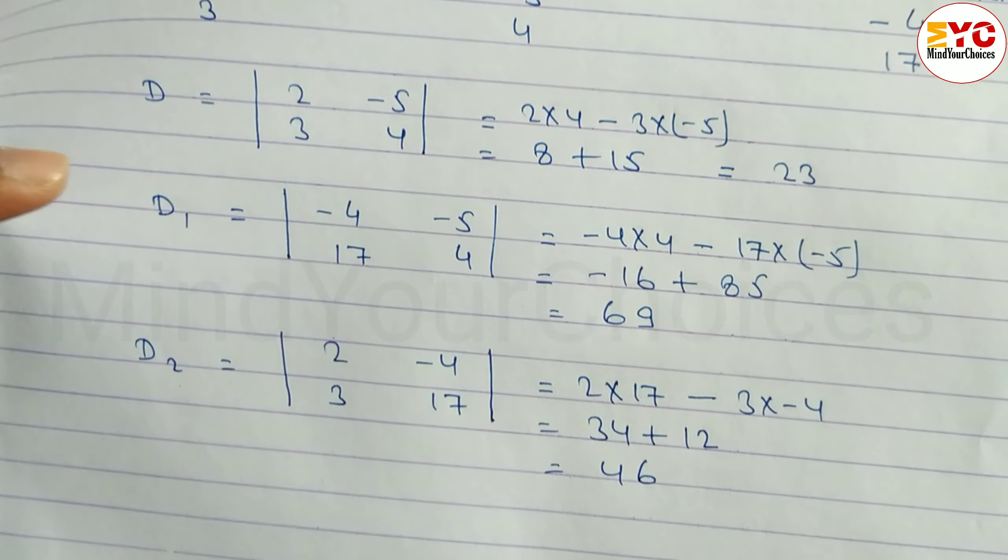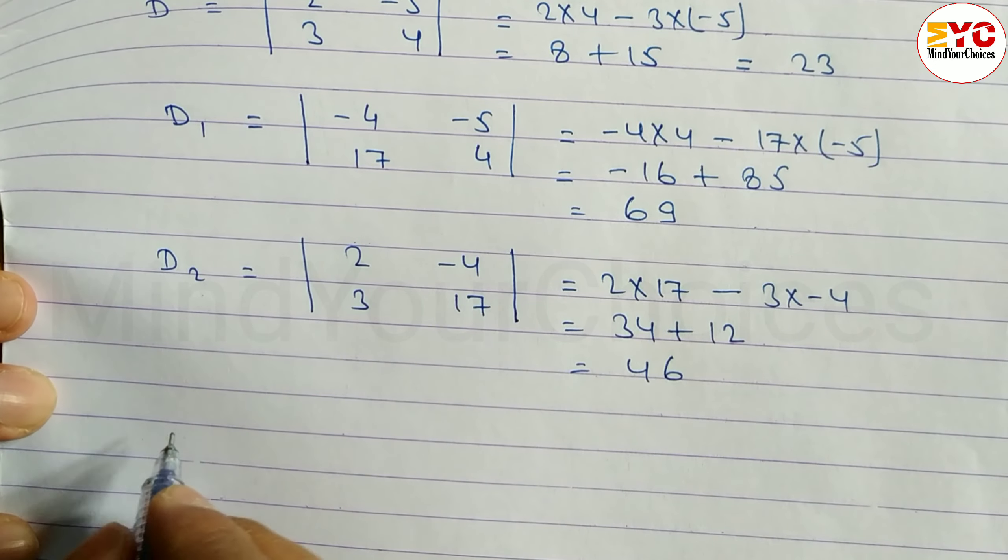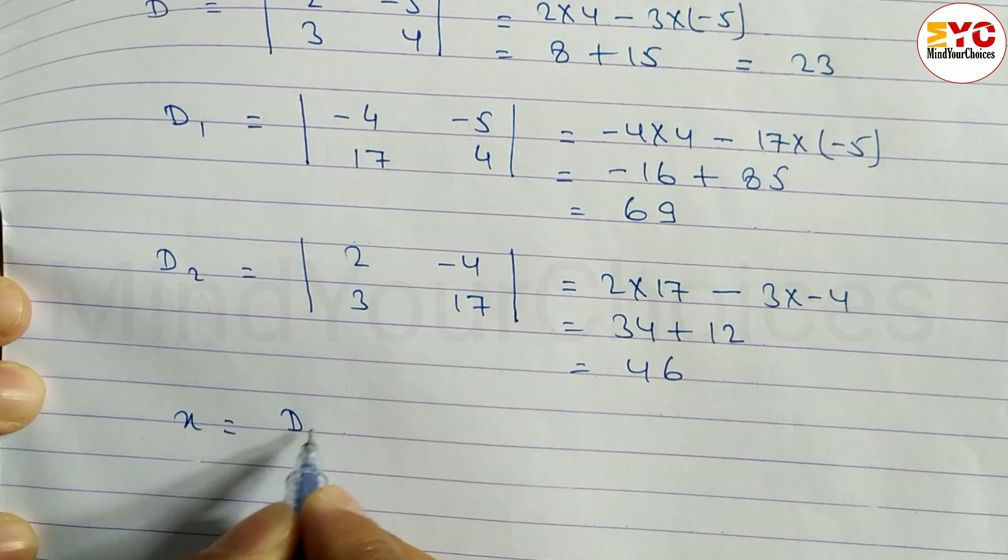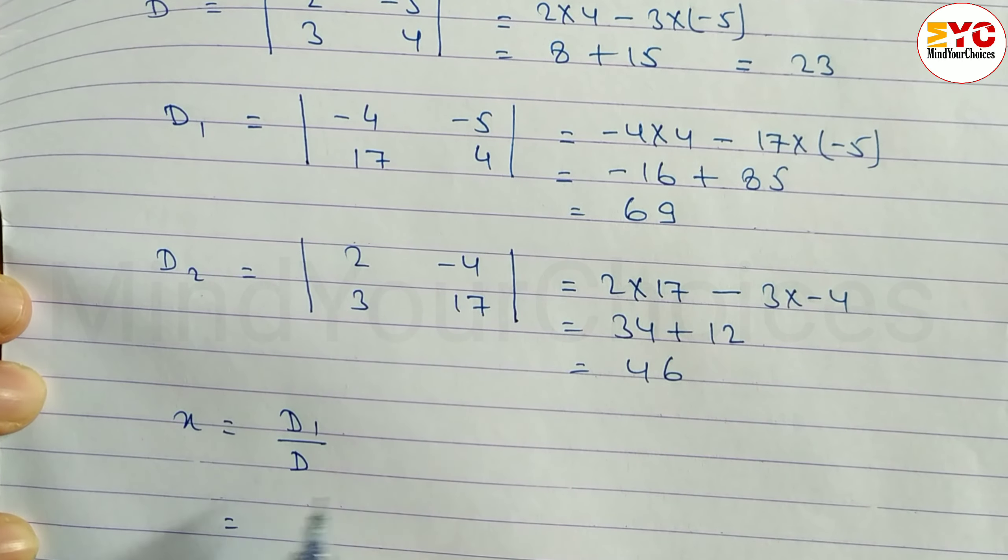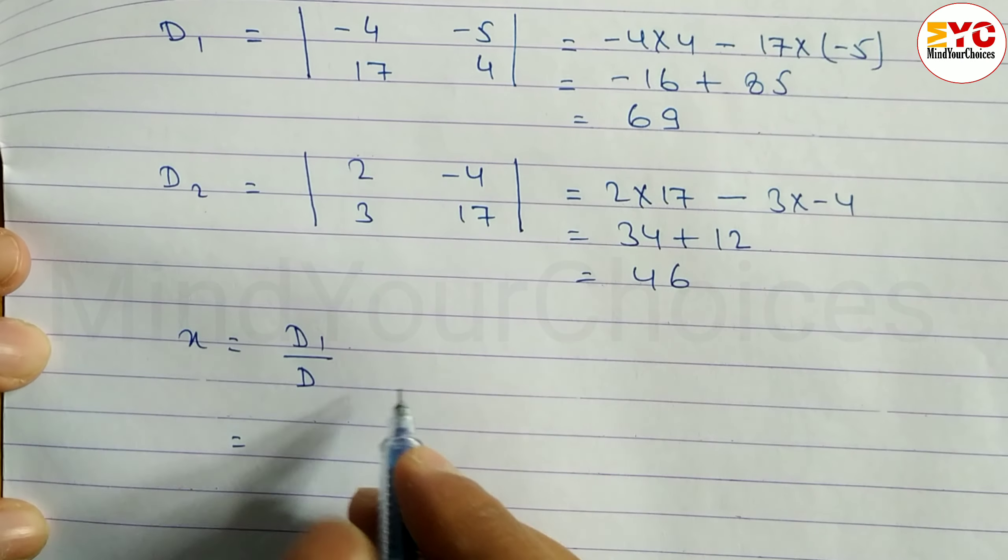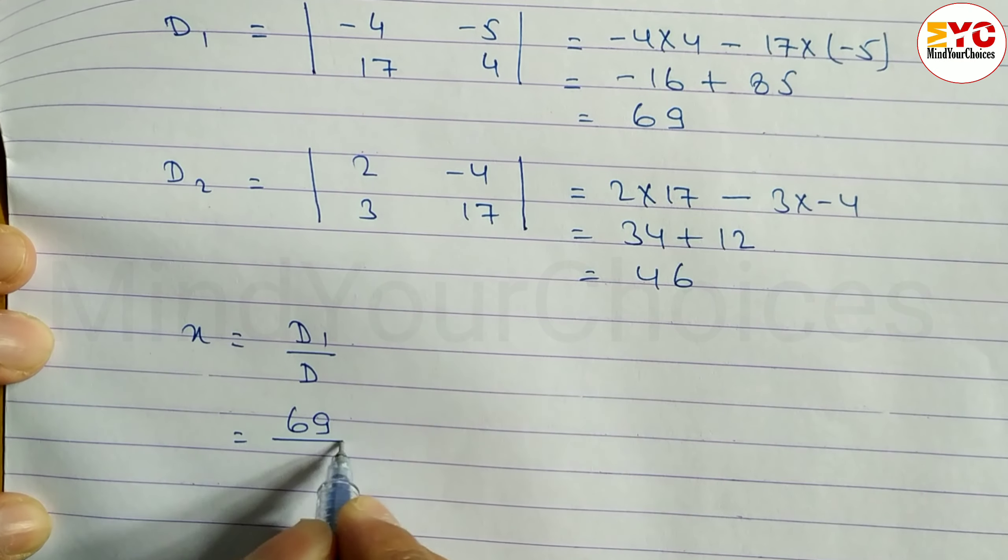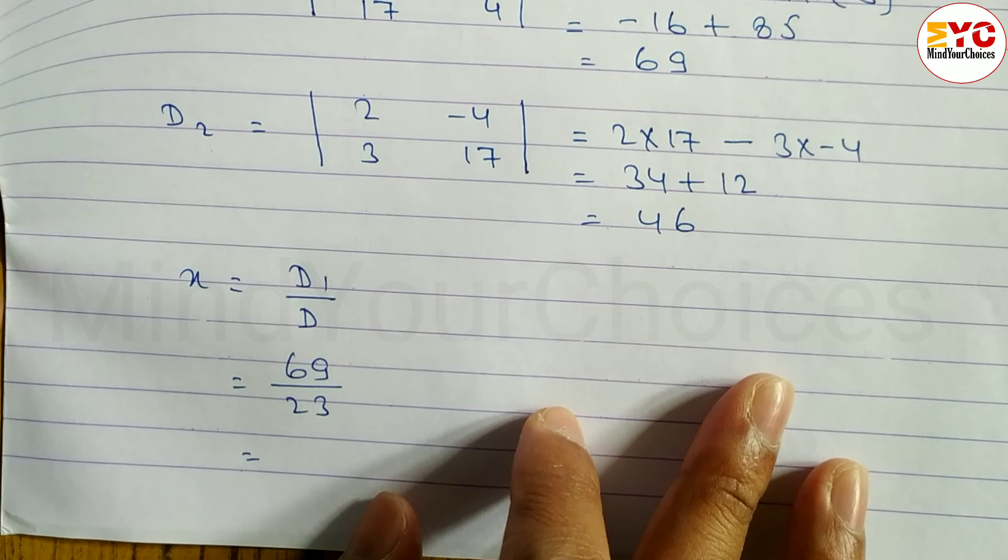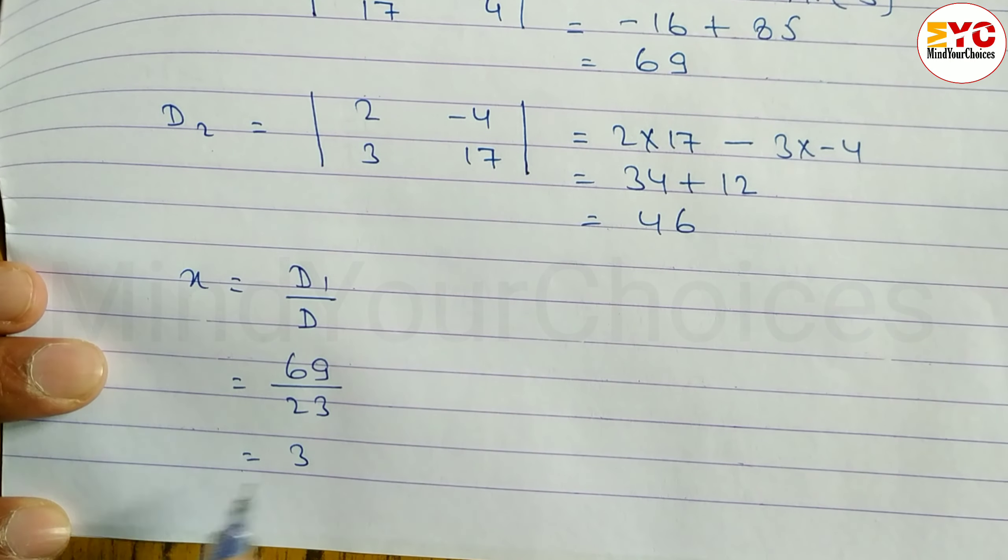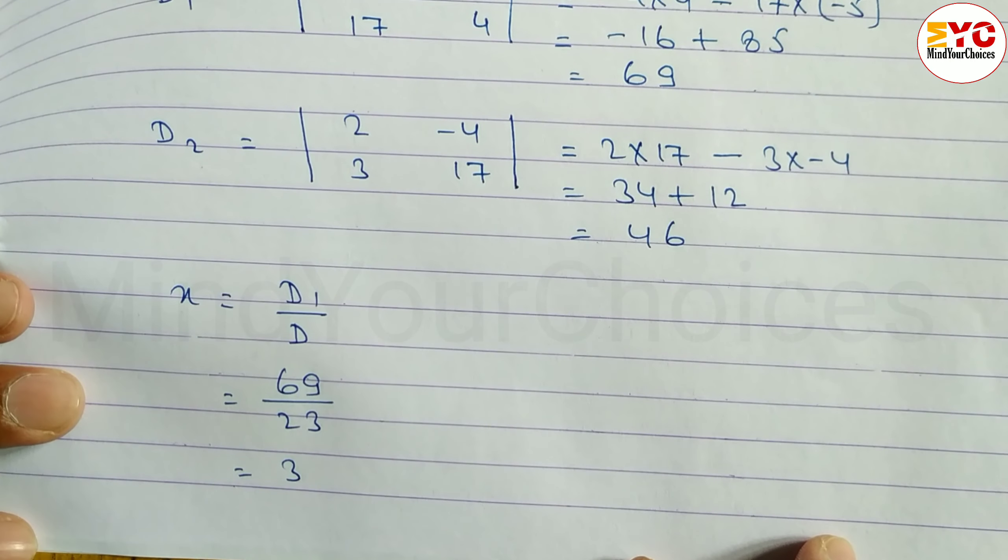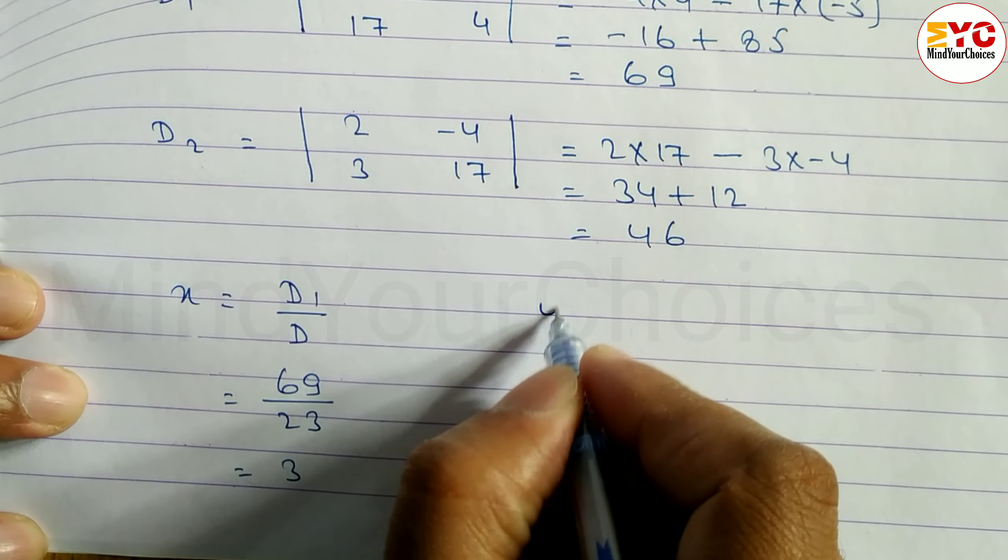Now we have to find out the value of x and y. The formula for x is D1 by D. D1 is 69, so we can write 69 by 23. Divide: this gives 3. So the value of x is equal to 3.